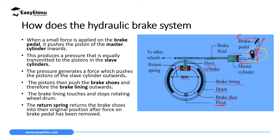The pressure generated in the master cylinder is transmitted to the other wheels. At each wheel, the pressure meets the slave cylinder, which has two pistons — one on the left and one on the right — in contact with the brake shoe. The brake shoe has a pivot so it can move easily. The slave cylinder presses the brake shoe, which presses the brake lining, which grips the drum. When the driver withdraws the force, the return spring compresses the brake shoe back and the drum is released.